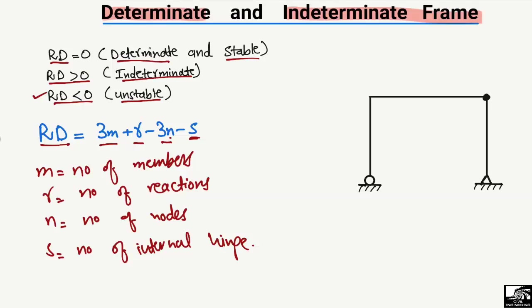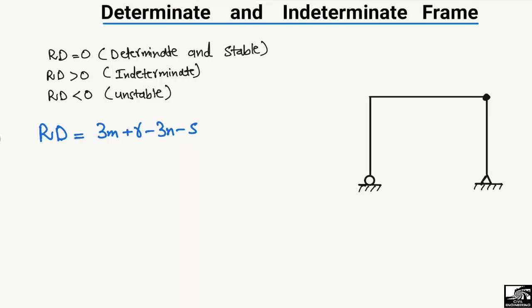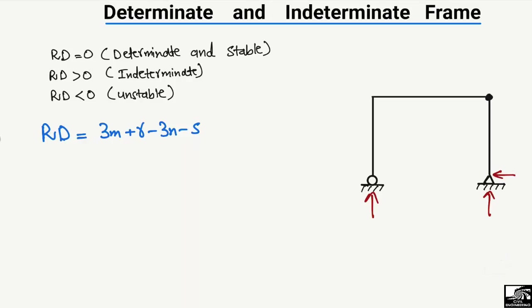Starting with the first example: the frame has a roller support, which takes only vertical reaction, and a hinge support, which takes both vertical and horizontal reactions. There are three members — two columns and one beam. There are three support reactions total, four nodes (joints where members connect), and one internal hinge visible in black.